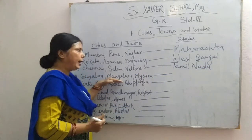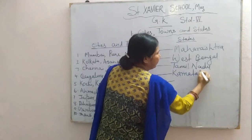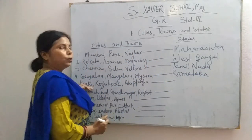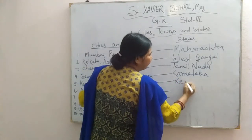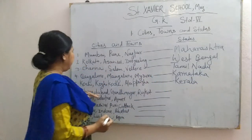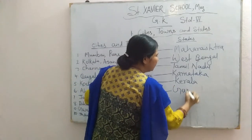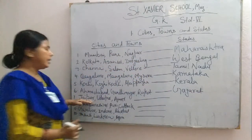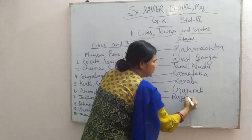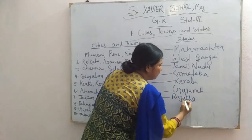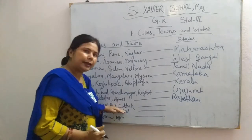Bengaluru, Mangaluru and Mysore are in Karnataka. Kochi, Kozhikode and Alappuzha are in Kerala. Ahmedabad, Gandhinagar and Rajkot are in Gujarat. Jaipur, Udaipur and Ajmer are in Rajasthan. Bhubaneswar, Puri and Cuttack are in Odisha.